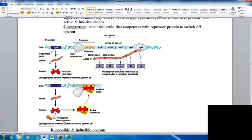When you look at this picture, tryptophan acts as a co-repressor. When it binds to the active repressor protein, it prevents RNA polymerase from attaching and no RNA is made, shutting down the gene. When it's not present, you have an inactive repressor.